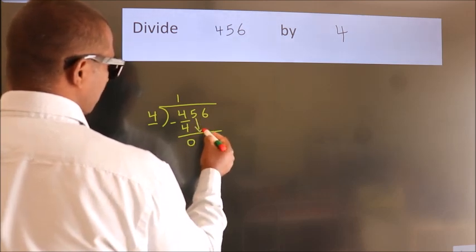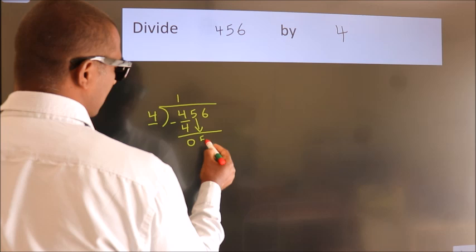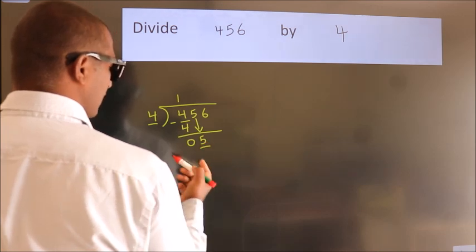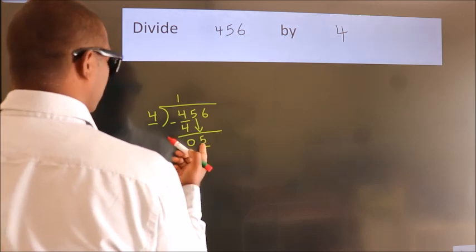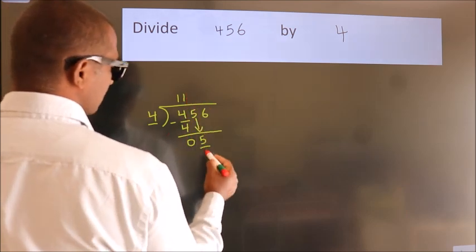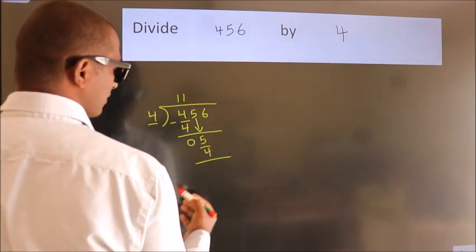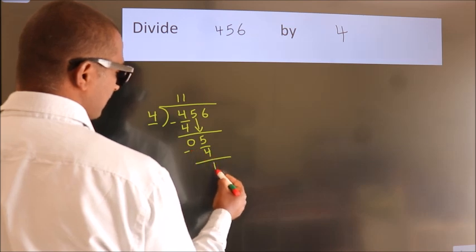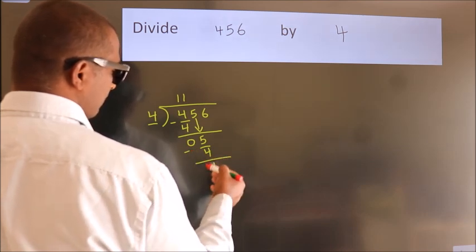bring down the beside number. So 5 down. So 5. A number close to 5 in 4 table is 4 once, 4. Now we subtract. We get 1.